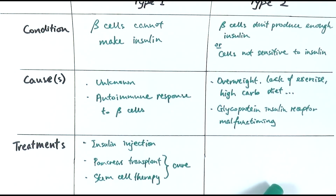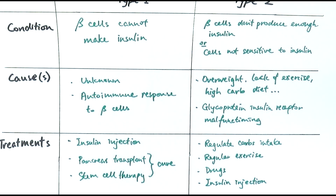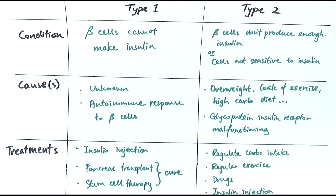Type 2 diabetes is harder to cure. Since cells are mainly insensitive to insulin, the primary approach is lifestyle change — losing weight, regulating carbohydrate intake, reducing sugar, and regular exercise to balance blood glucose. There are also drugs that can stimulate insulin production when beta cells aren't producing enough, or drugs that decrease the rate of glucose absorption in the intestines. In certain cases, insulin injection can also be used for type 2, though its effectiveness is limited if cells are completely insensitive to insulin.